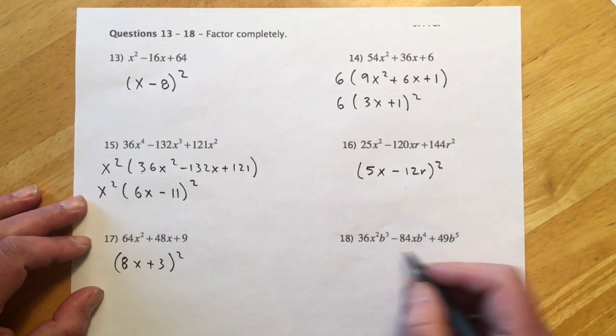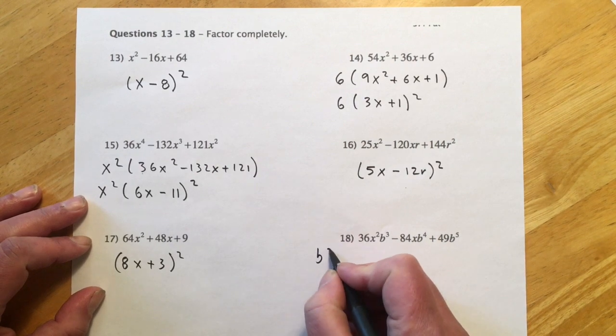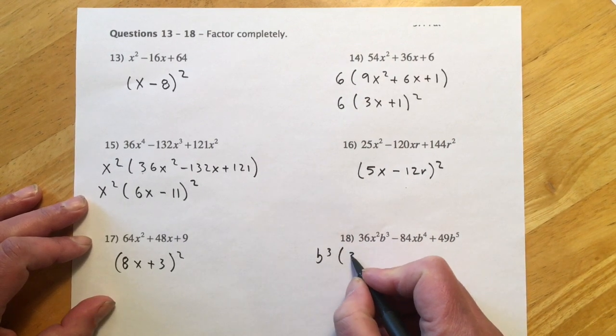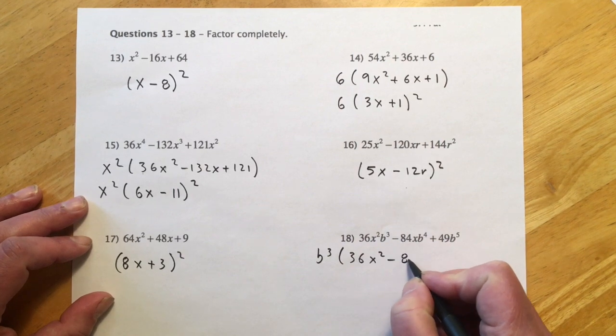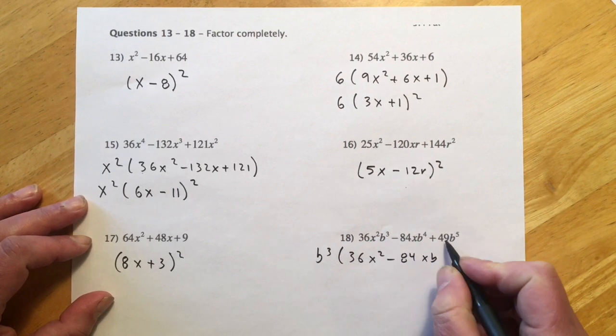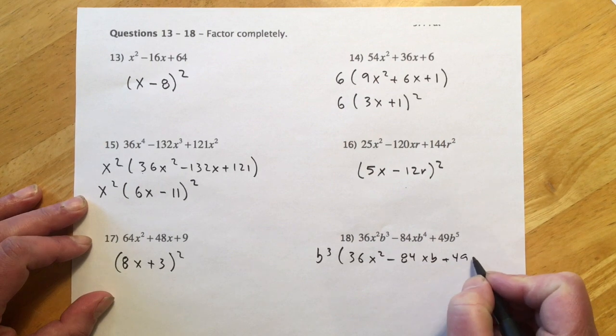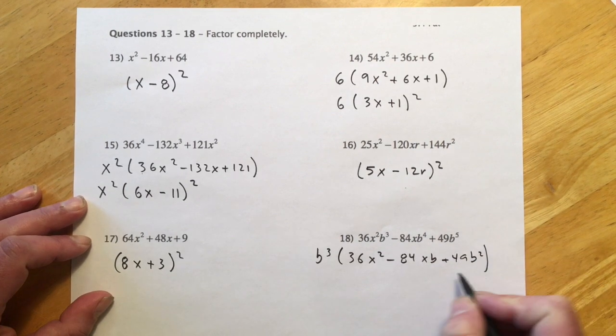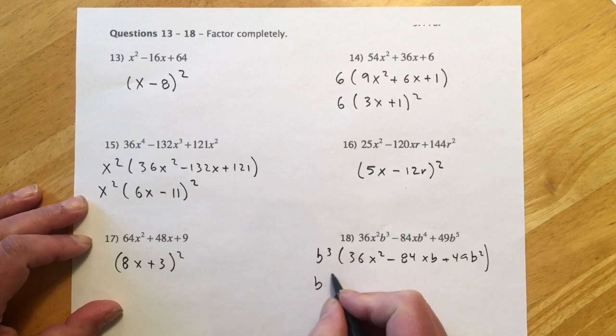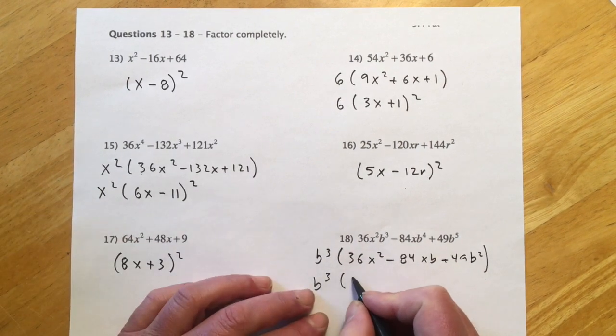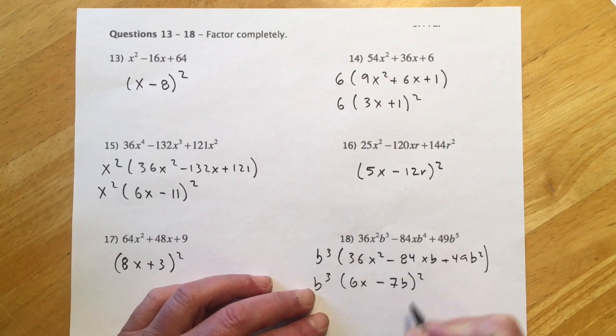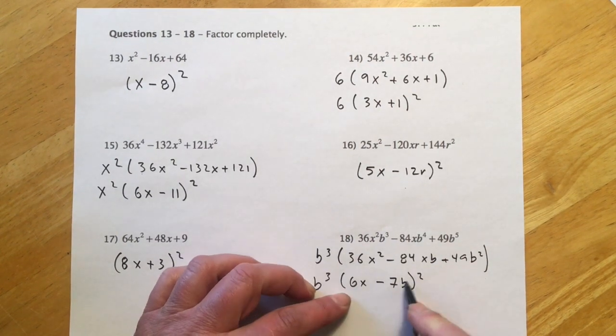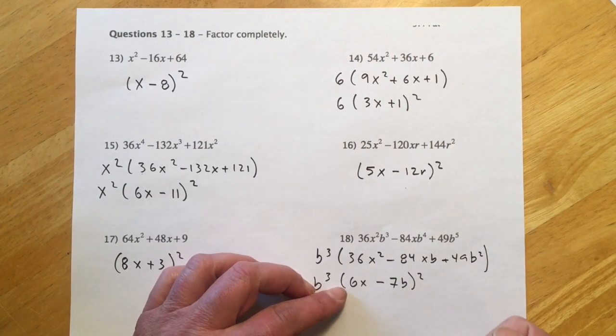Here, it looks like maybe there's a b³ in the way, so let me get that out. So b³(36x² - 84xb + 49b²). I see the squares on the ends, so that makes me hope it's going to be one of these. b³(6x - 7b)² quantity squared, that'd be 42xb, and then doubled, there's our 84.